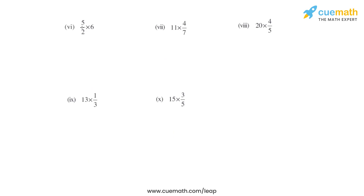In the sixth bit we have 5 over 2 times 6. That is basically 5 times 6 divided by 2. We can simplify: 2 goes into 6 three times, so the answer will be 5 times 3, which is 15.